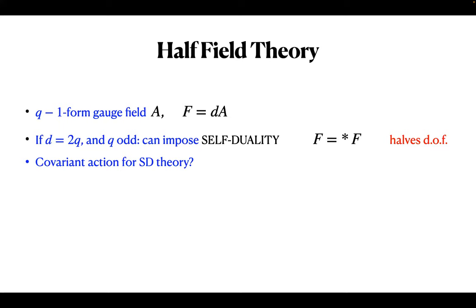The reason I want q to be odd is so that star-squared equals plus one. If q were even, this would only make sense if F were complex, but this works for real F. A long-standing question was to find an action for such a self-dual gauge field. We're in Lorentzian signature throughout. There has been a huge number of papers over the years with lots of different approaches.